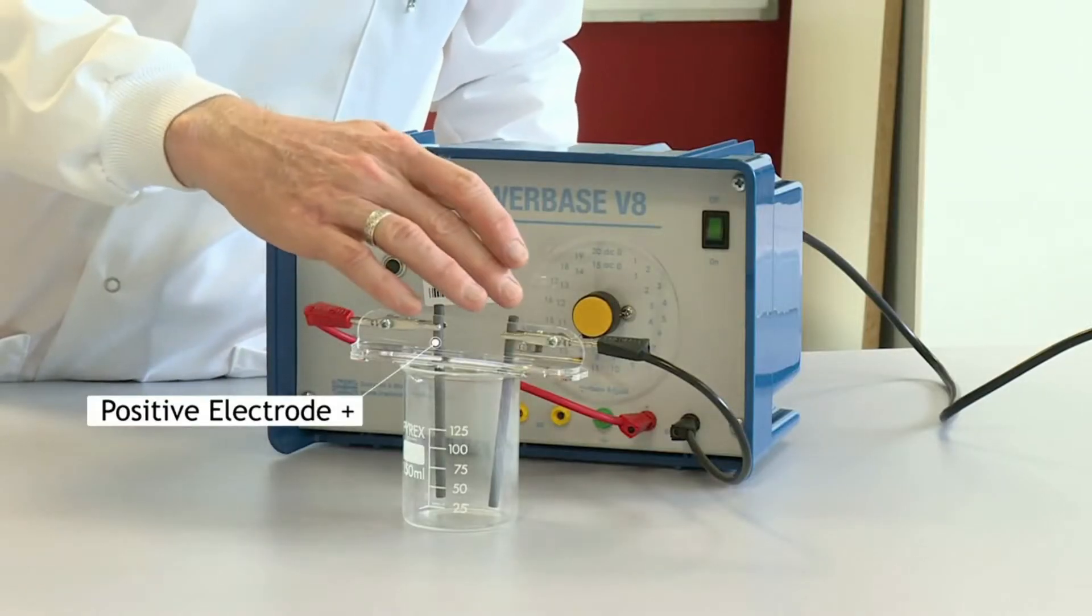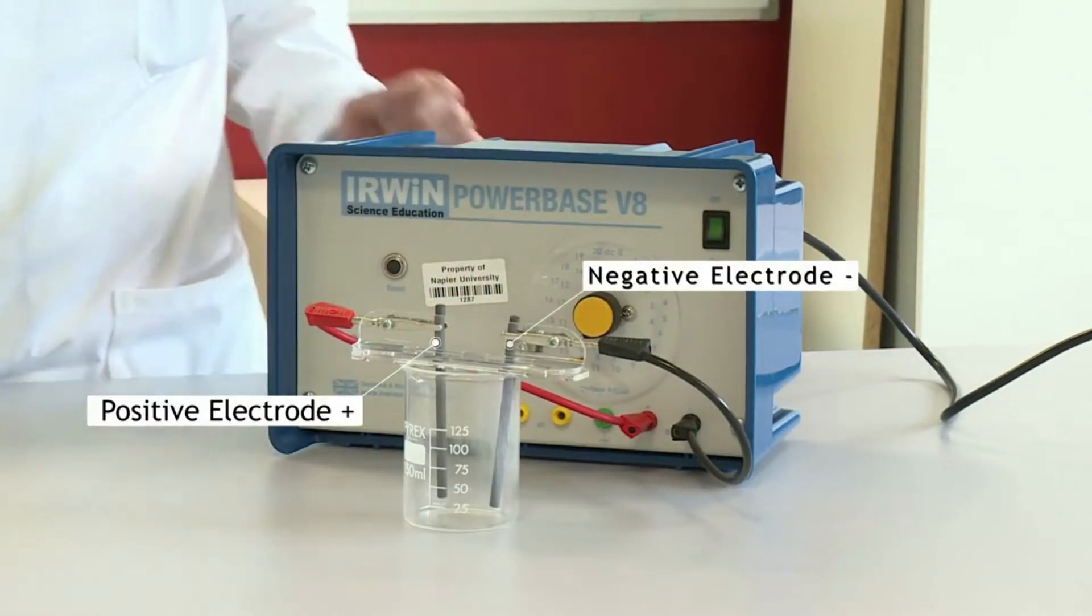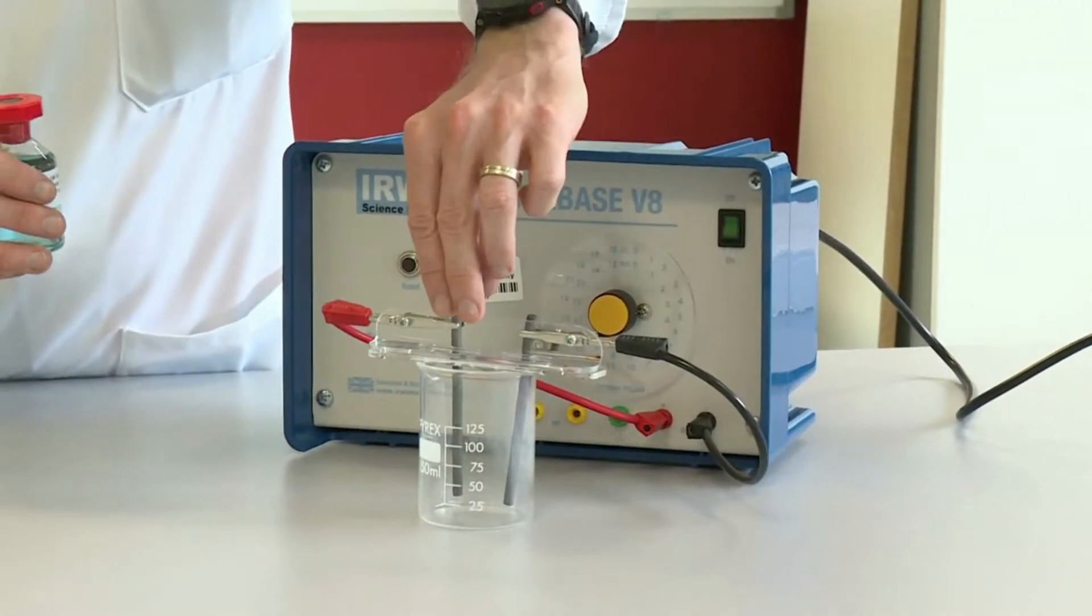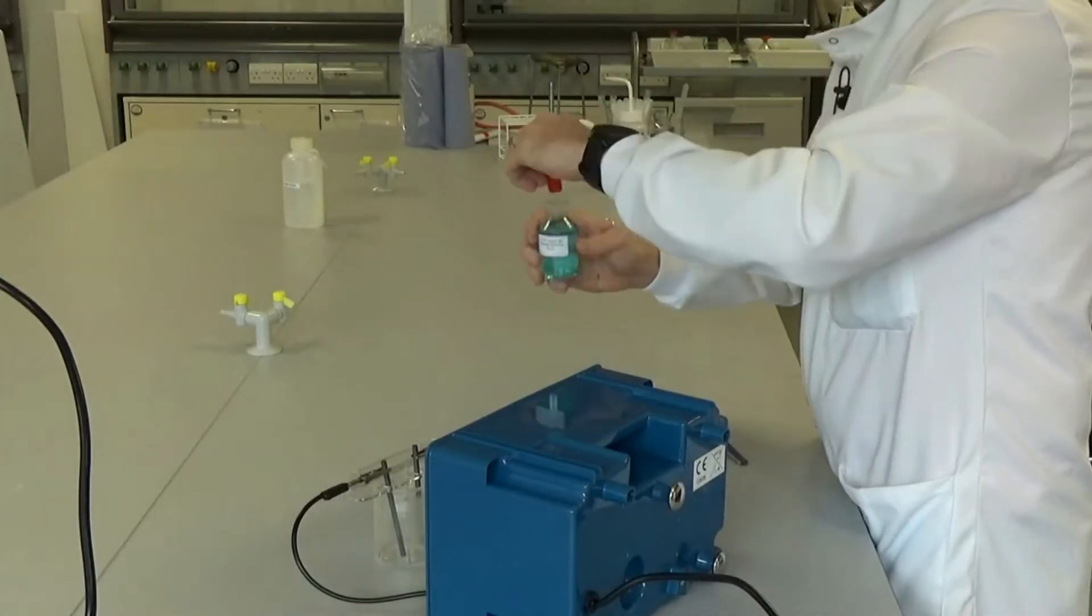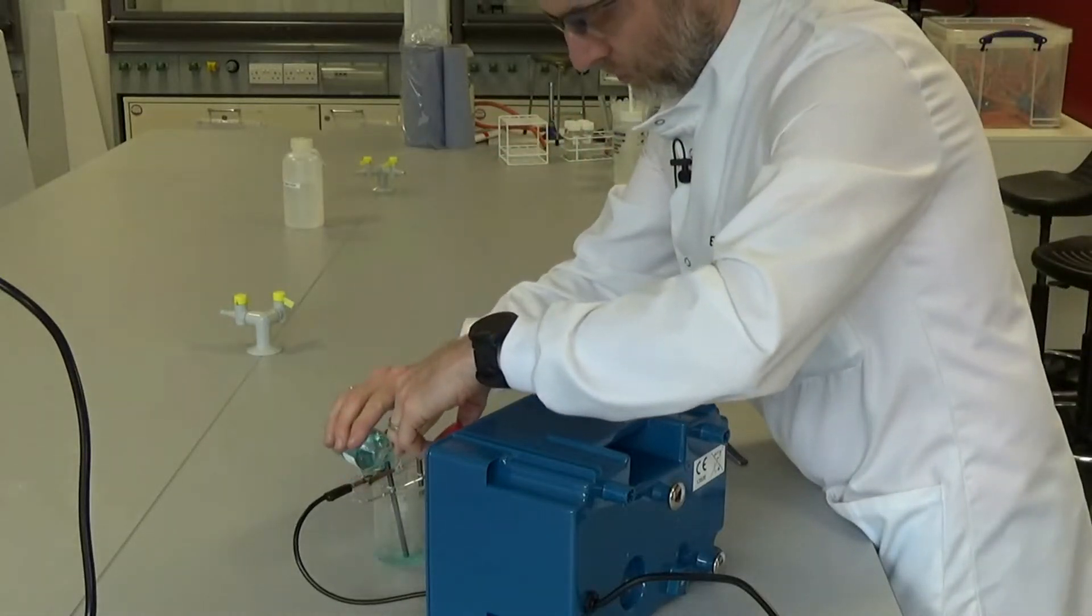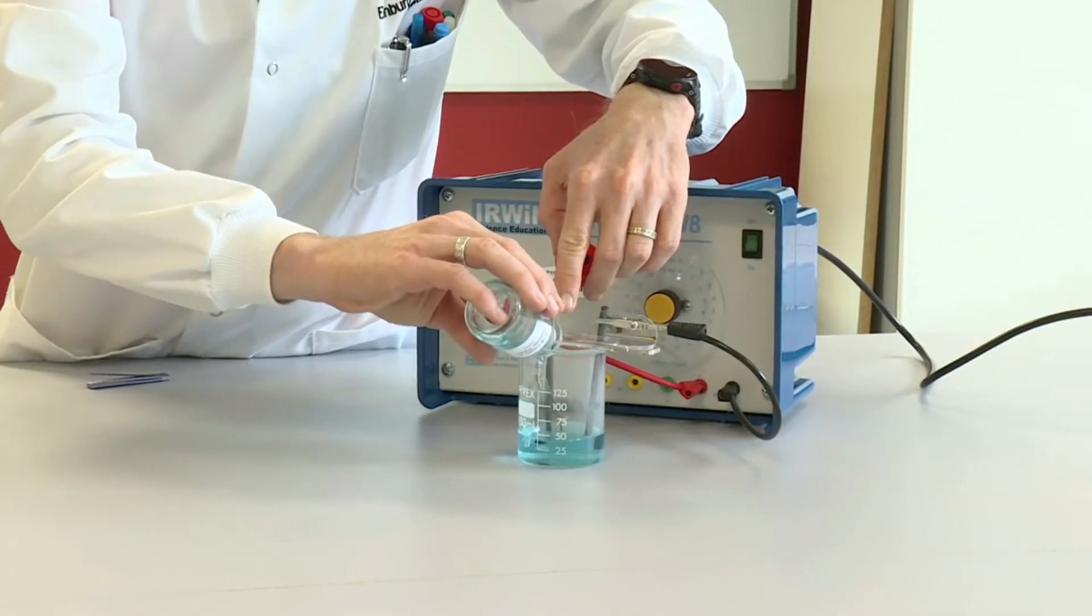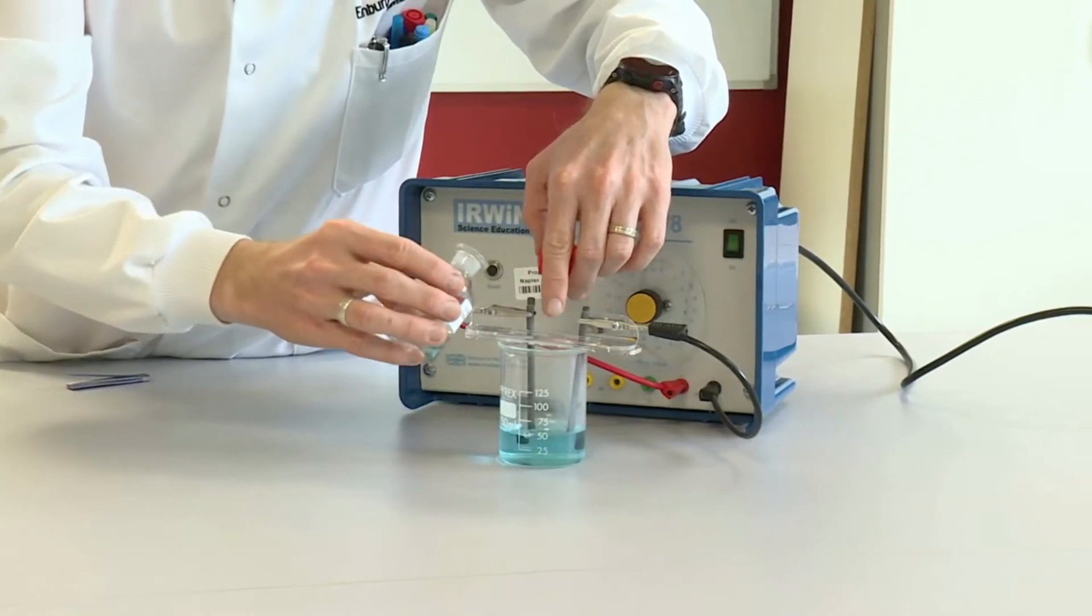This is my positive electrode and this is my negative electrode. I can then add my copper chloride solution to the beaker. You can see copper chloride solution is a blue colored solution because of the blue colored copper ions that are in there.